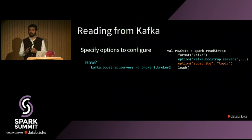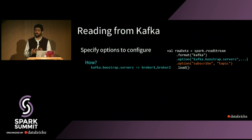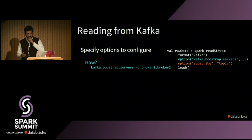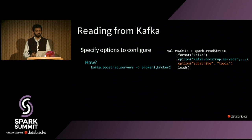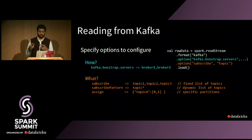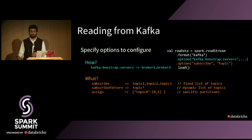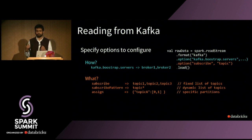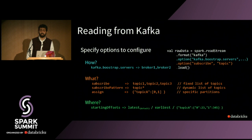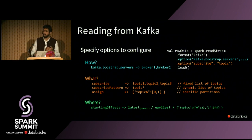Walking through the code: first, you specify the Kafka format and exactly how and where to read from. You specify kafka.bootstrap.servers with a comma-separated list of brokers. You can subscribe to a single topic, subscribe to a pattern of topics, or specifically assign a particular topic and partition — mirroring the Kafka client APIs. You also specify where to start reading from: the latest offset, the earliest available offset in Kafka, or something specific.